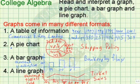Another type of graph is a pie chart. The entire graph stands for 100%. In this particular case, we're dealing with shipping policy, and 45% goes to trucks.